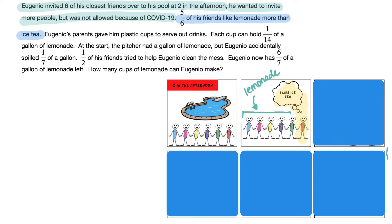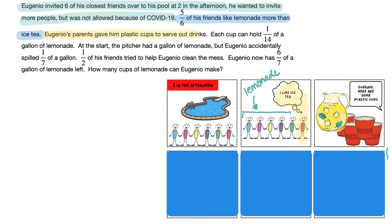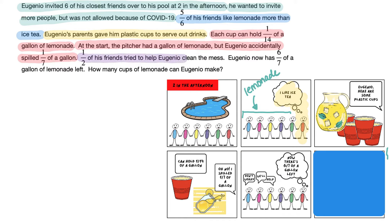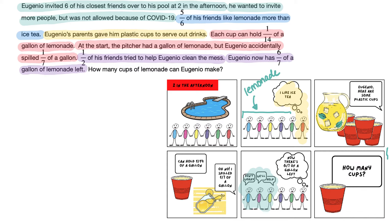The next sentence tells us that Eugenio's parents gave him plastic cups to serve out the drinks, and each cup can hold one-fourteenth of a gallon of lemonade. At the start, the pitcher had a gallon of lemonade, but Eugenio accidentally spilled one-seventh of a gallon. One-half of his friends tried to help Eugenio clean the mess — so that means three of his six friends are willing to help. And now Eugenio has six-sevenths of a gallon left, and we want to know how many cups of lemonade he can make.